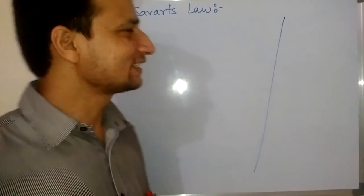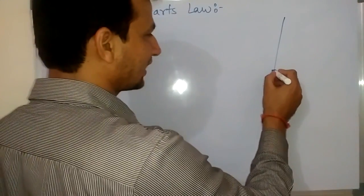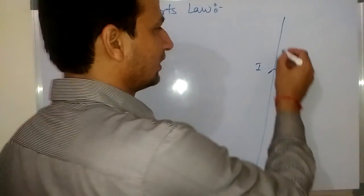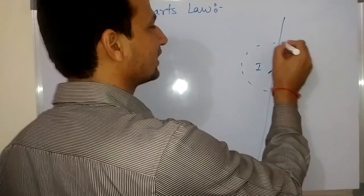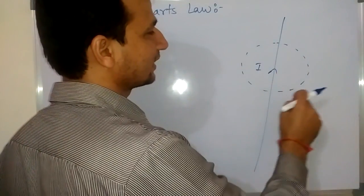Suppose there is a current carrying conductor carrying current I. You must have studied in class 10 that there will be magnetic field lines around this conductor due to current I in the form of concentric circles.